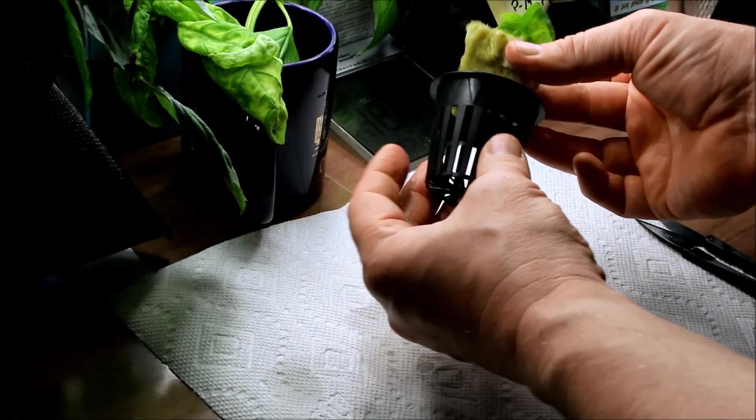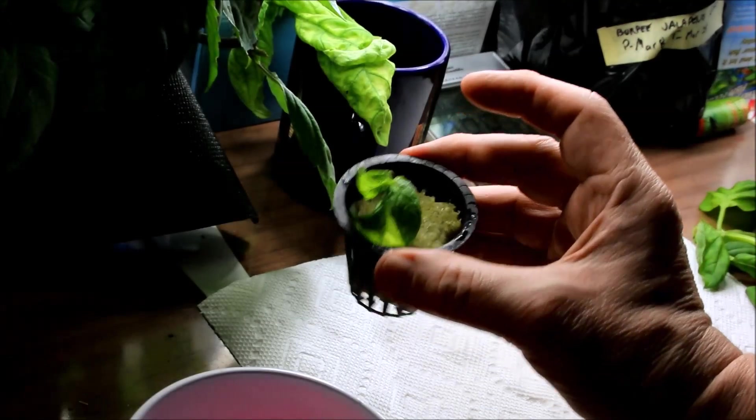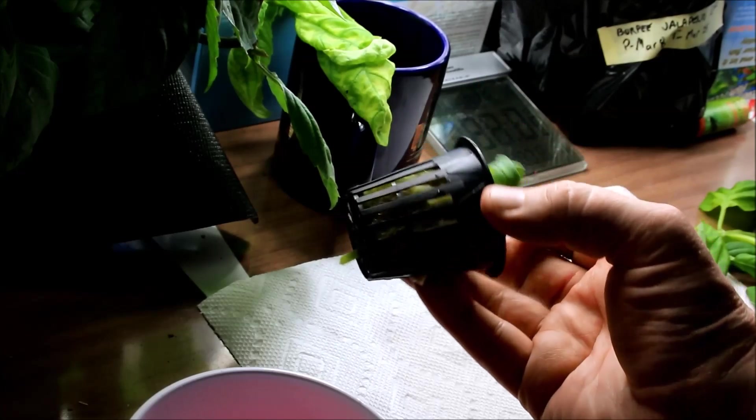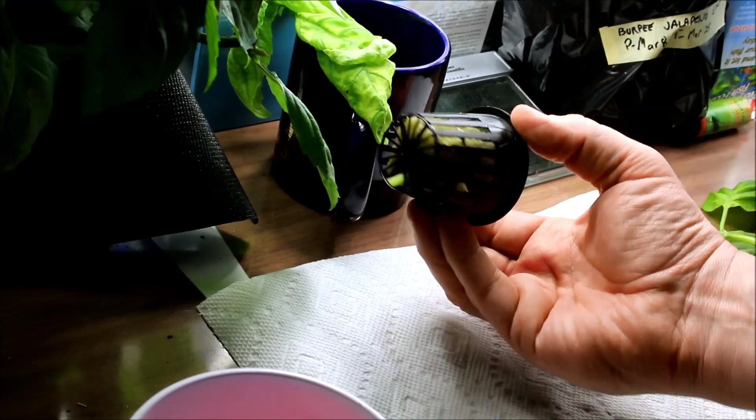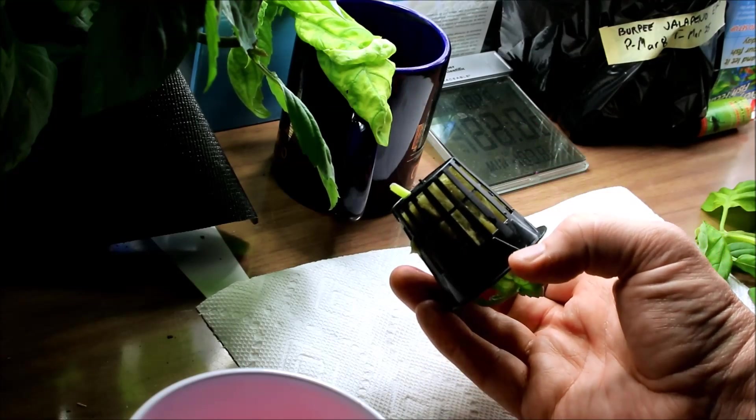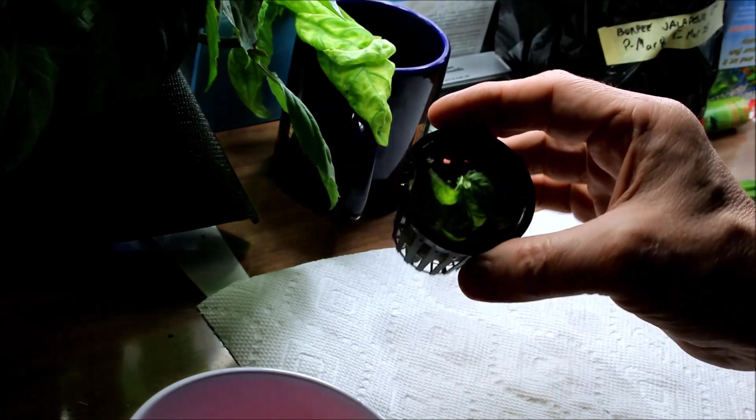And I'm just going to stick this into my net pot. They've been placed into the rock wool and then I'm leaving enough of the stem that it's extending out beyond the bottom of the net pot. So I'm hoping this is going to allow the roots to proliferate.